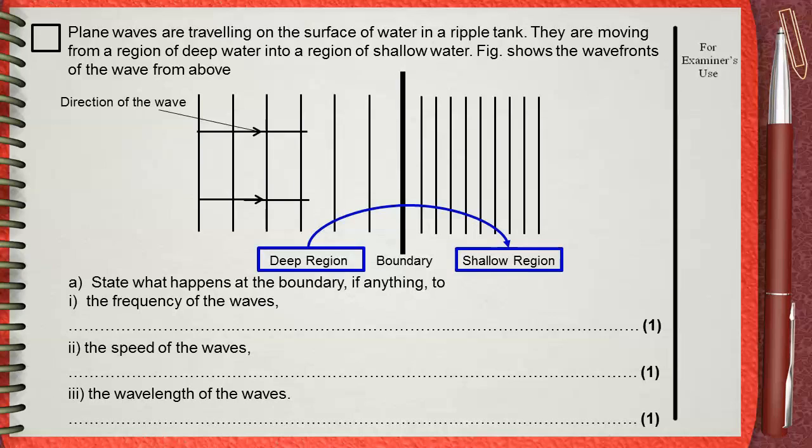In this case, frequency stays the same. Frequency is not affected by anything, it is always the same. From deep to shallow, the speed of water waves will decrease. Also the wavelength will decrease. Of course, if the water waves were moving from shallow to deep, the opposite will happen, but the frequency will stay the same.